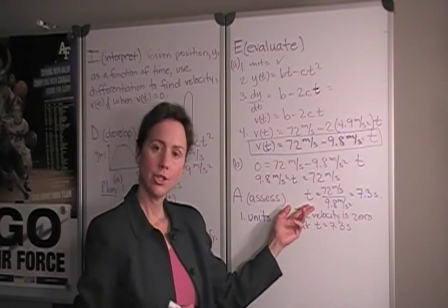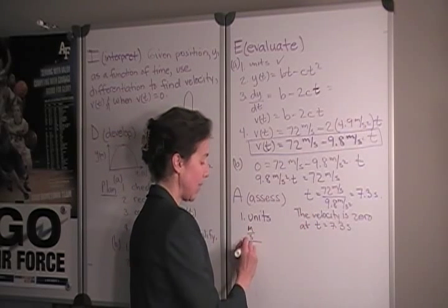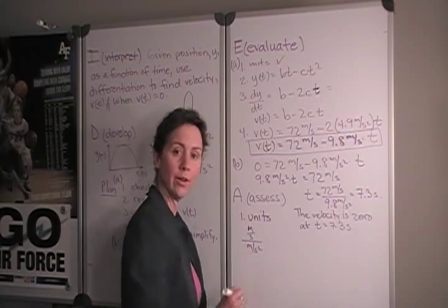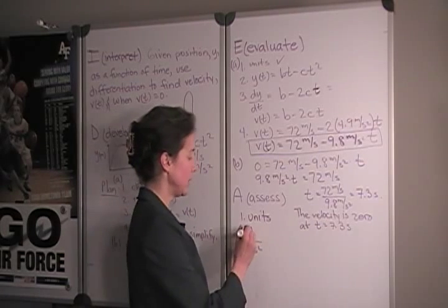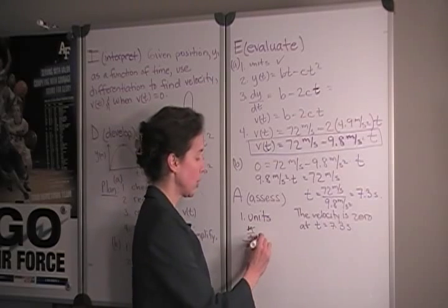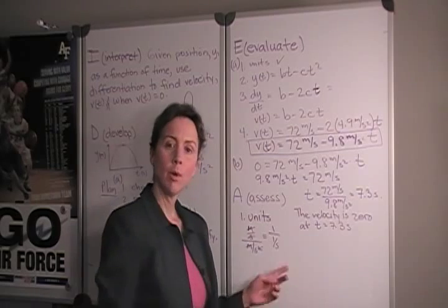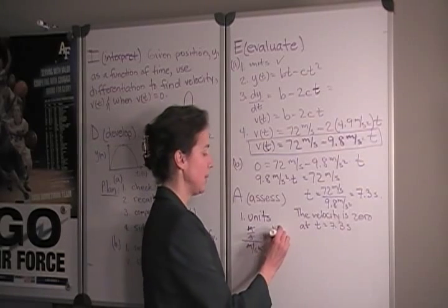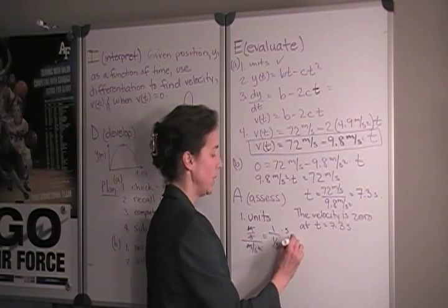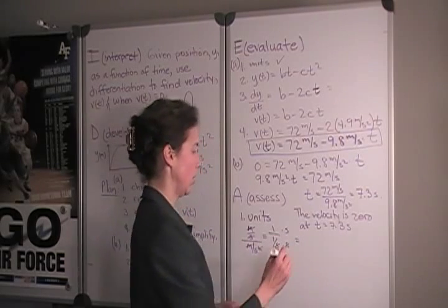For our last calculation for time, we had meters per second divided by meters per second squared. And if we simplify that, we see that meters cancels, one term of seconds cancels, so we're left with one over one over seconds. If we multiply both the numerator and the denominator by seconds, we see that this equals seconds.